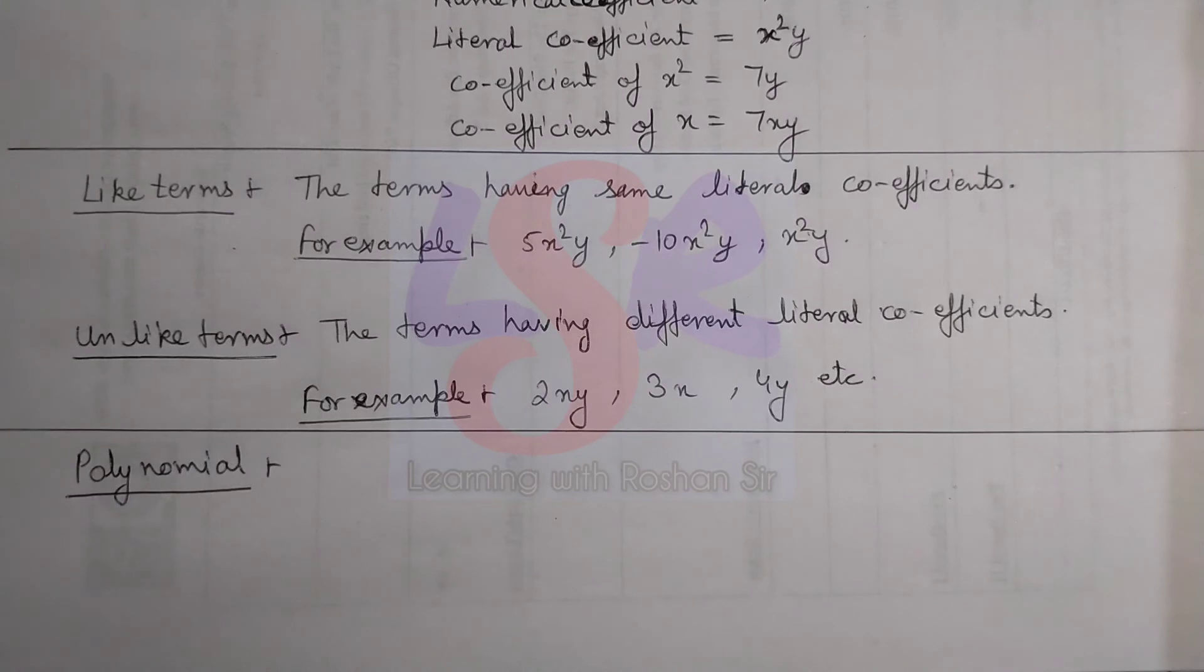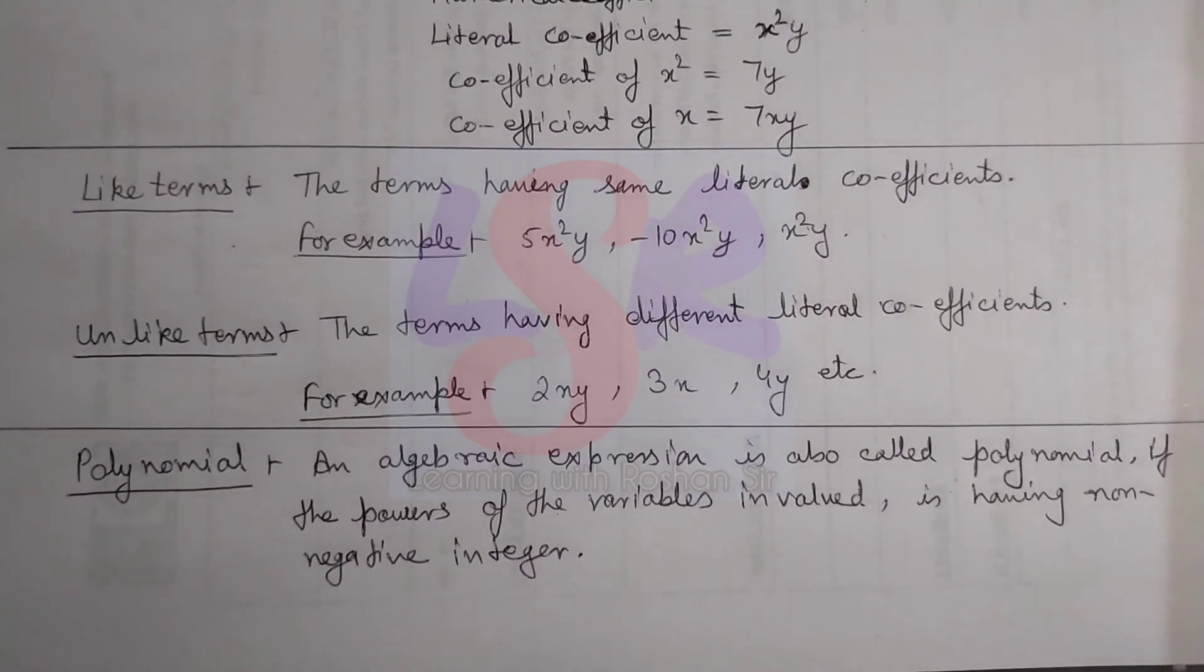Then we get one more new term, that is polynomials. A polynomial is an algebraic expression if the power of the variable involved is a non-negative integer. So any algebraic expression can be called a polynomial if it has powers with positive sign.